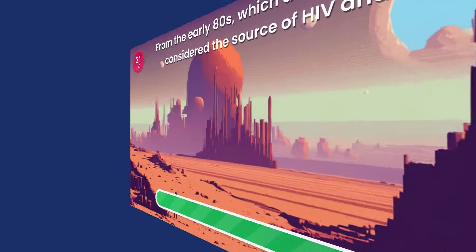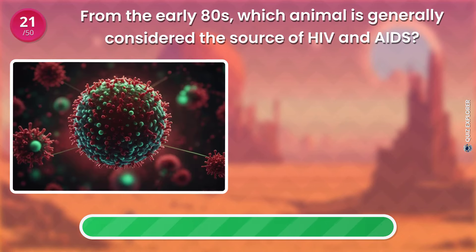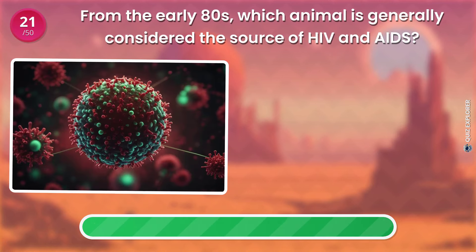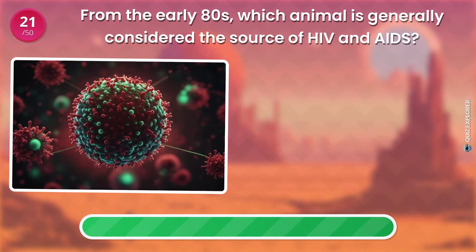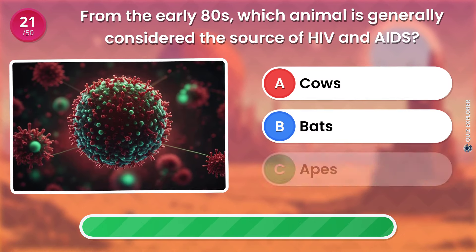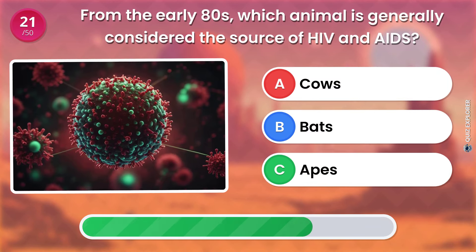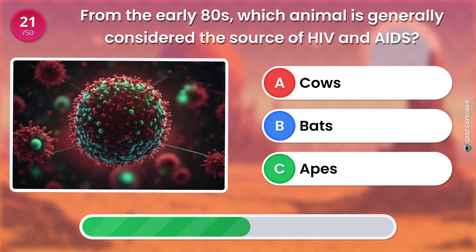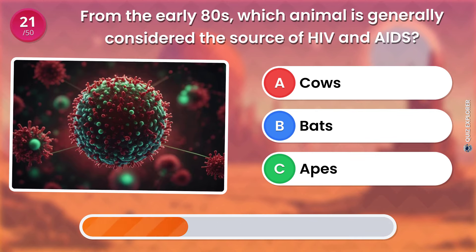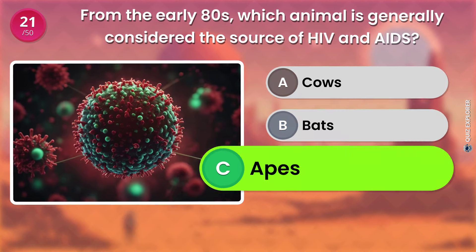From the early 80's, which animal is generally considered the source of HIV and AIDS? Cows. Bats. Apes. The answer is: Apes.